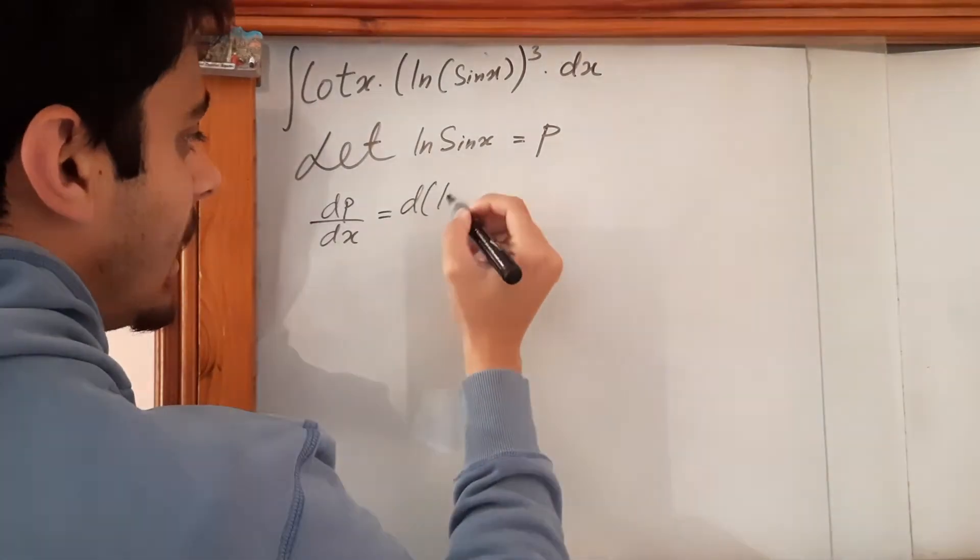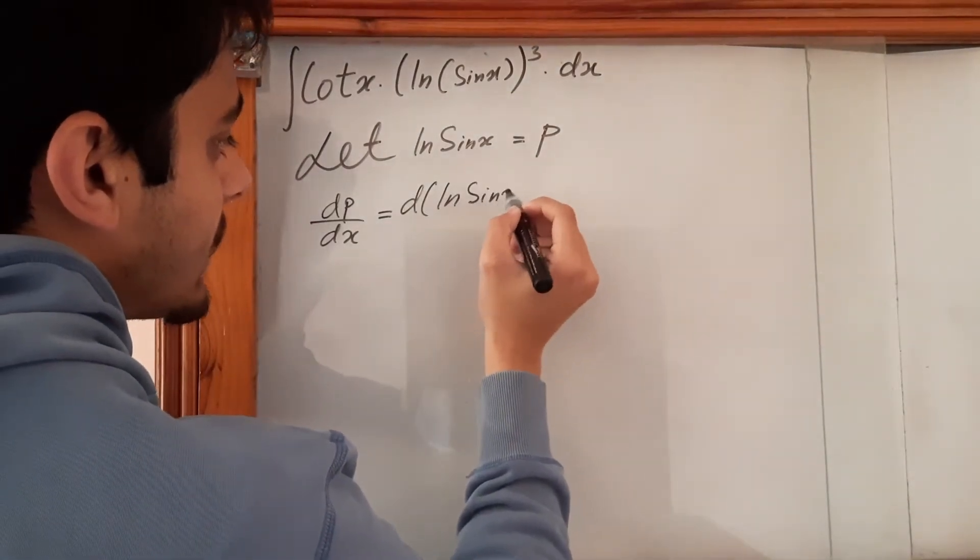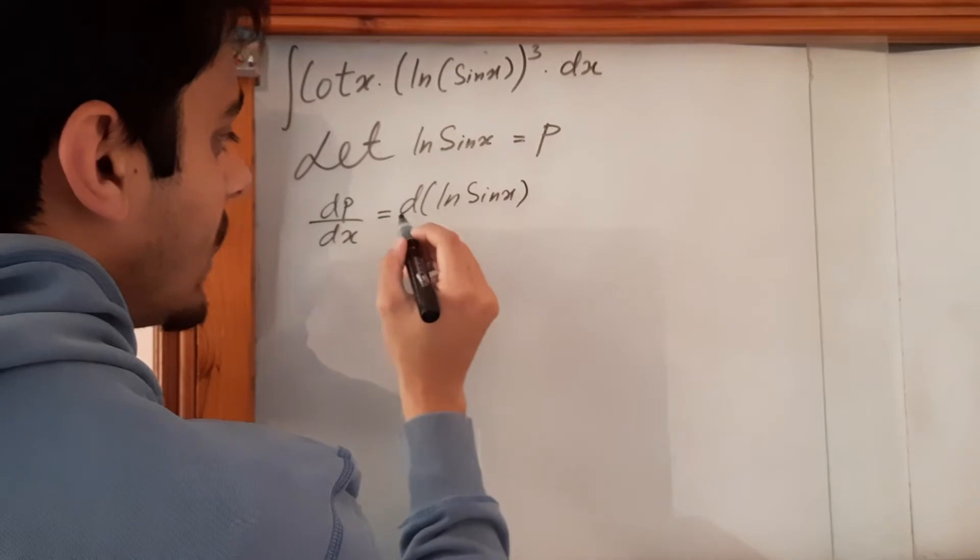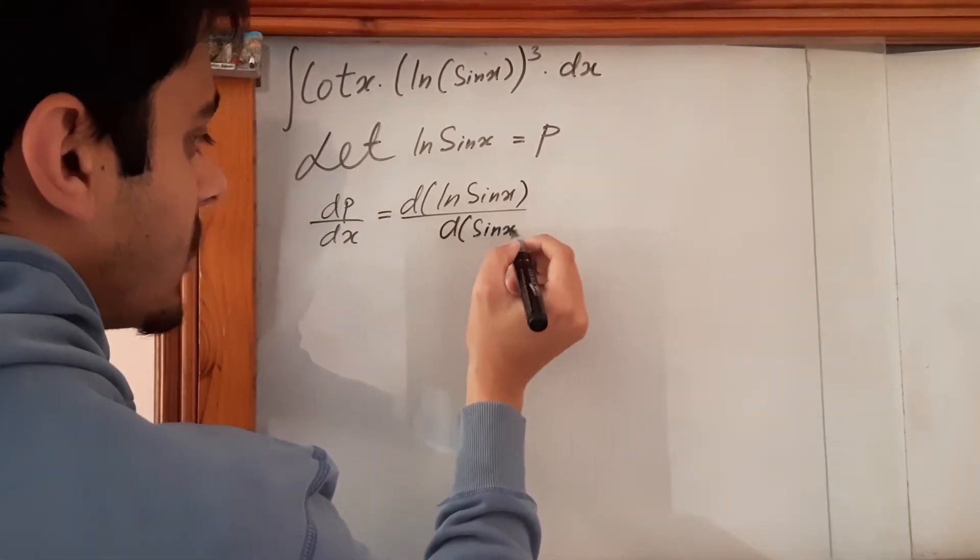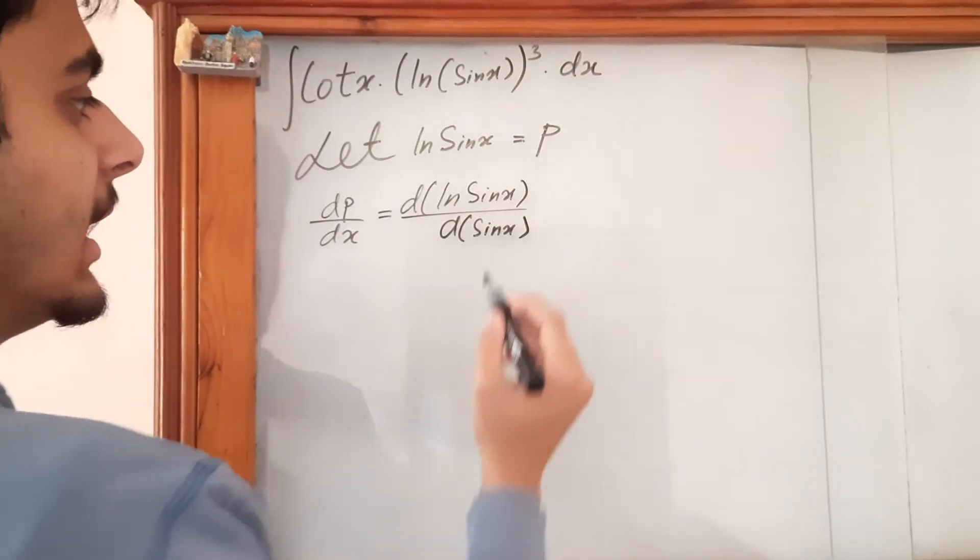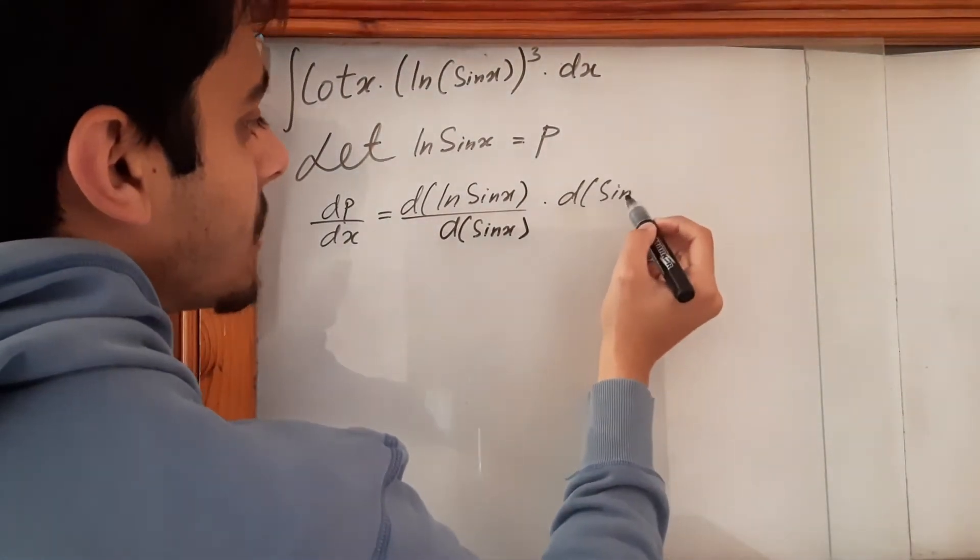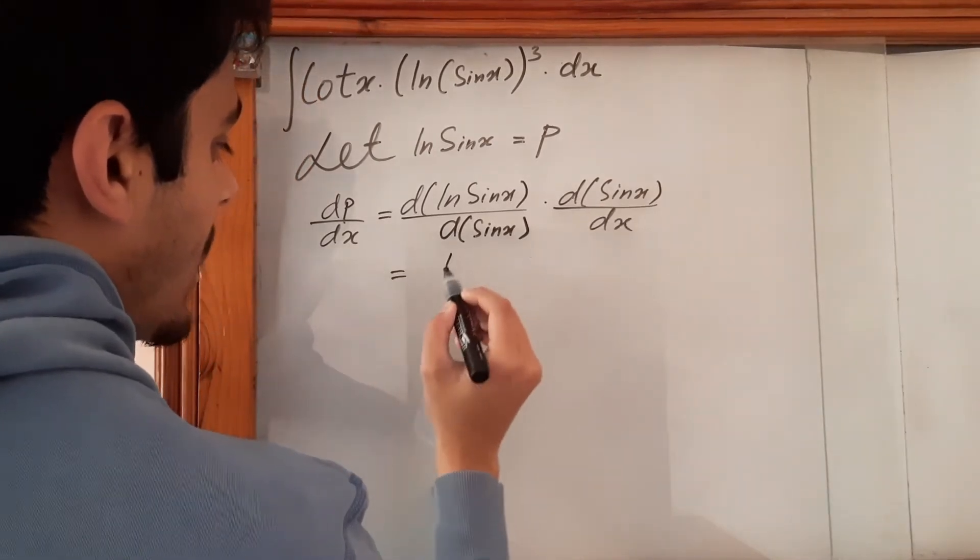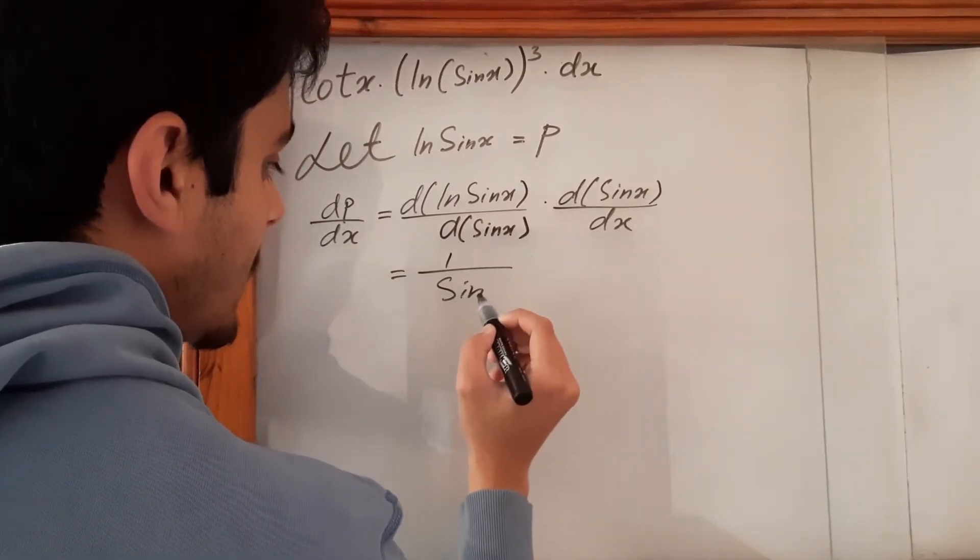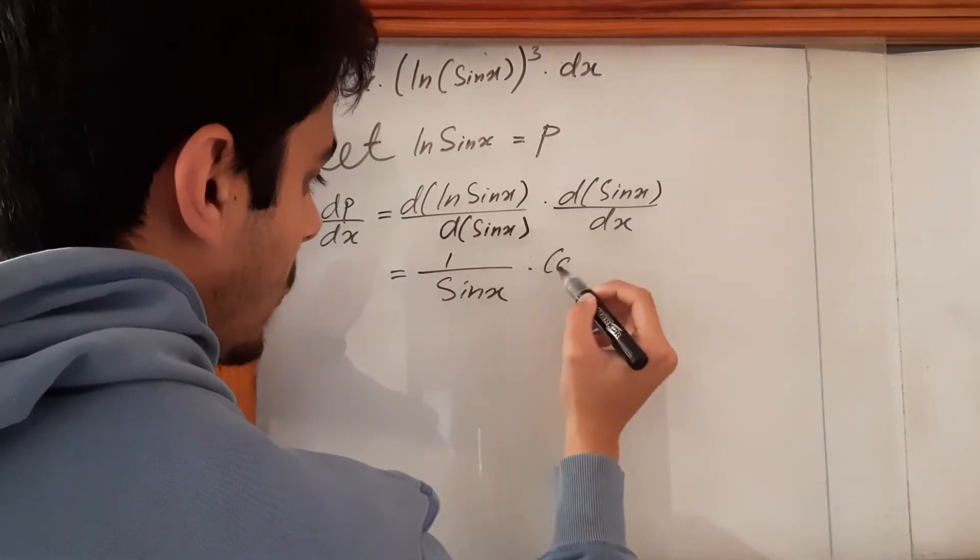So it is d ln sin x upon d sin x because we are applying the chain rule over here, and then sin x with respect to x. So we have 1 upon sin x over here. This is of course cos x.